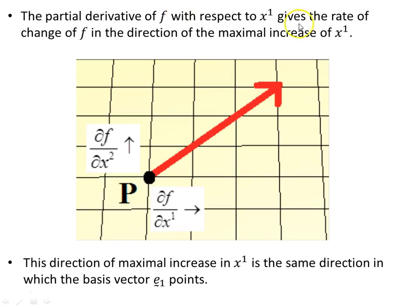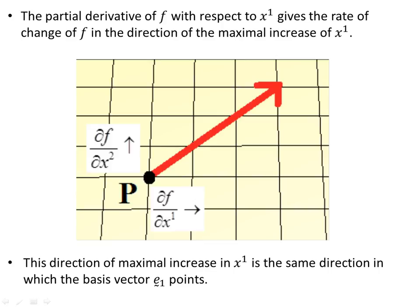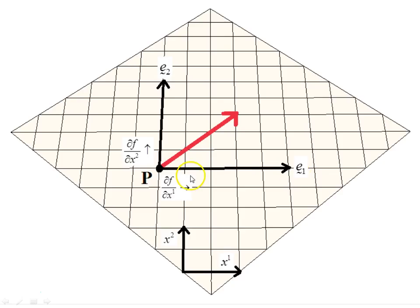The partial derivative of f with respect to x1 gives the rate of change of f in the direction of maximal increase of x1 — that's to the right. Similarly df/dx2 gives the rate of change in the x2 direction — upward on screen. This direction of maximal increase in x1 is the same direction in which the basis vector e1 points, and df/dx2 points in the same direction as e2.